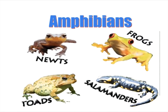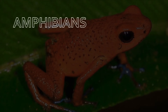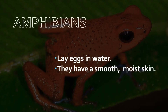Amphibians are animals which can live both on land and in water. Newts, frogs, salamanders, and toads are examples of amphibians. Amphibians lay eggs in water and have a smooth, moist skin. Whenever you look at an amphibian, you will find their skin is always moist.